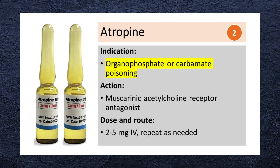Atropine is used to treat organophosphate or carbamate poisoning. It acts as a muscarinic acetylcholine receptor antagonist. The initial dose is 2-5 mg IV and may be repeated every 5-10 minutes if necessary.